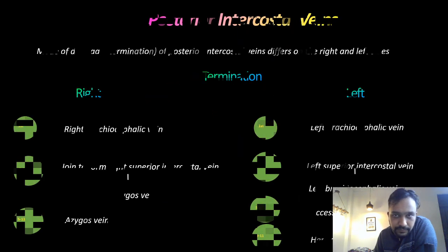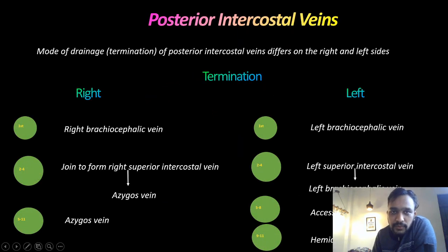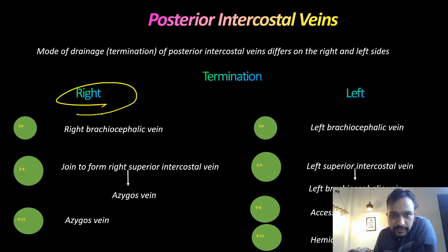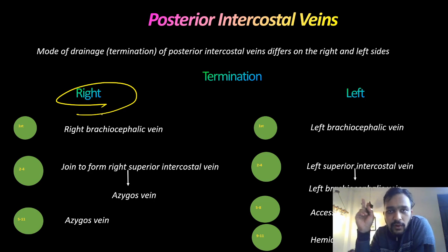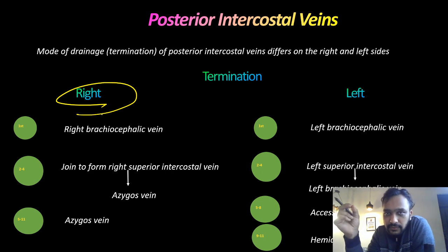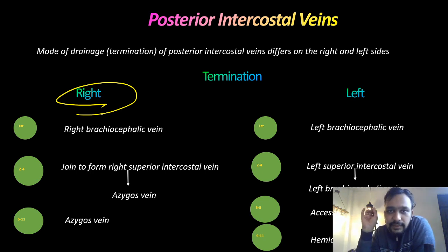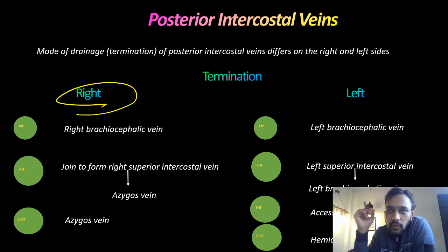Talking about the posterior intercostal veins — on either side, the first posterior intercostal vein is draining into the brachiocephalic vein. The second, third, and fourth posterior intercostal veins join together to form the superior intercostal vein.